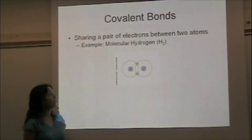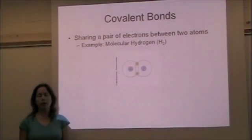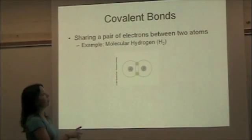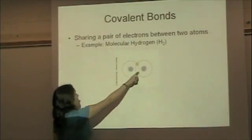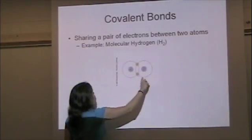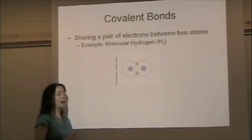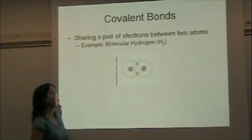Covalent bonds are different than ionic bonds, where electrons are gained or lost. In a covalent bond, electrons are shared. So the electrons spend some time around one atom and they spend some of their time around the second atom, rotating around both atoms.